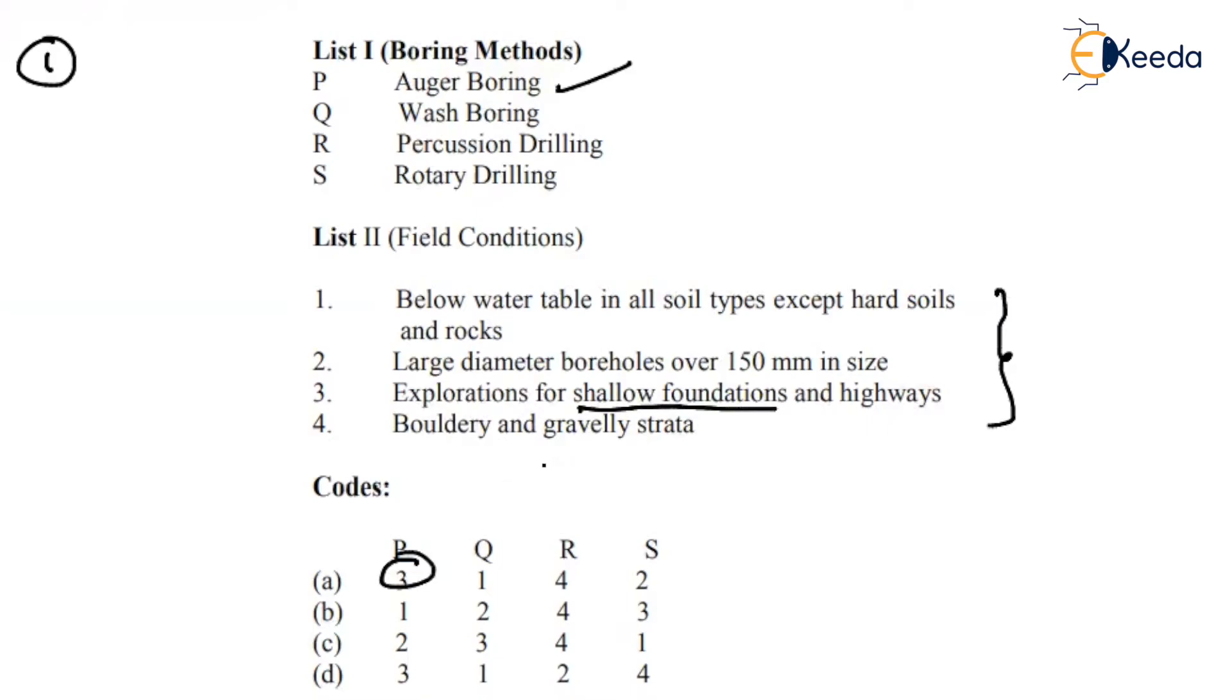For me, P is three. It looks suitable. What about Q? Q is one in both cases. Wash boring means it can be applicable for all types of soils except hard rocks, so Q is okay.